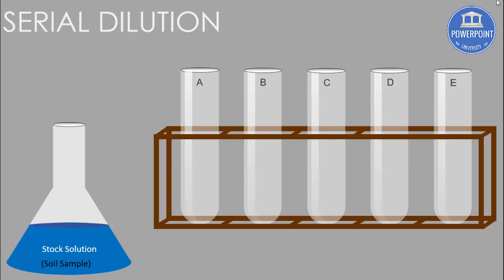As you can see here, I have put five test tubes numbered one through five, and I've named them A, B, C, D, and E. Then I have taken some stock solution, or you can see the soil sample.